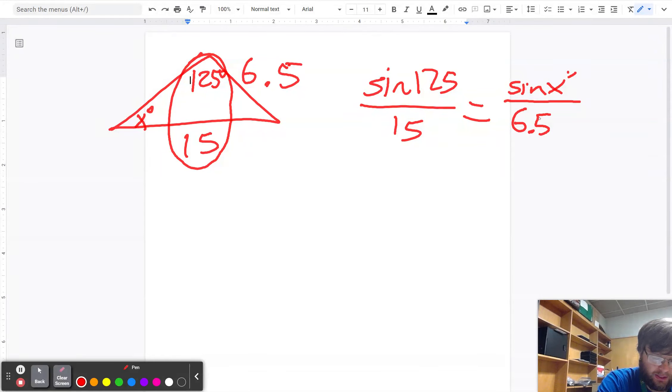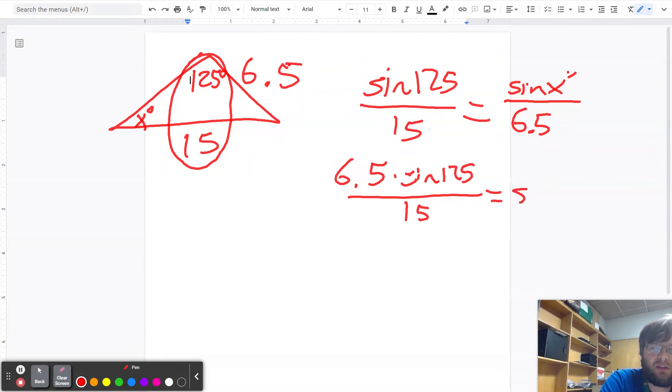Okay? So now, what I can do is multiply by 6.5. So 6.5 sine of 125 over 15 is equal to sine of X degrees. So, I can use my calculator then to find the sine of 125 degrees. So I go 125 sine of that times 6.5 and divide it by 15 and I get this.